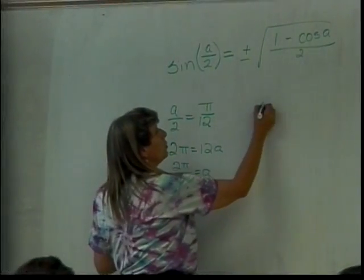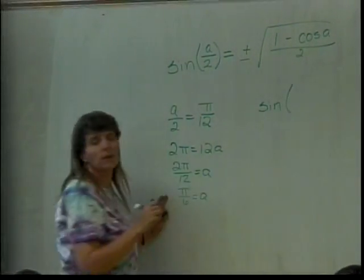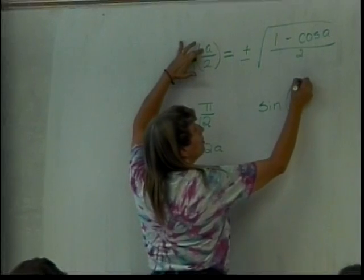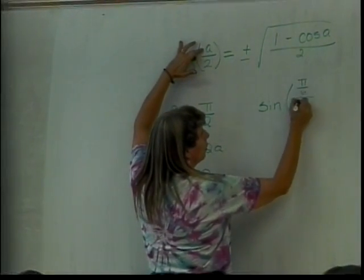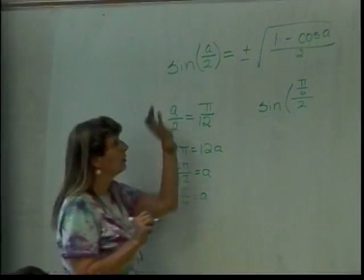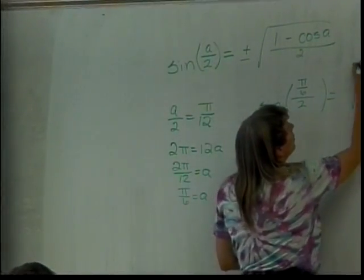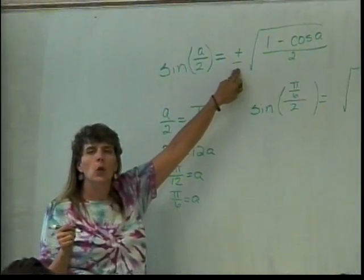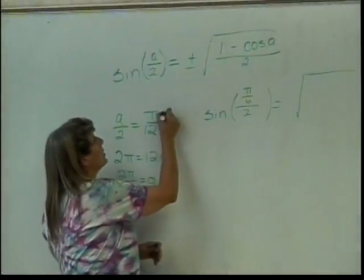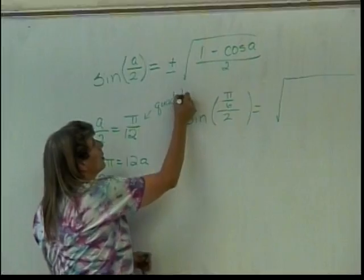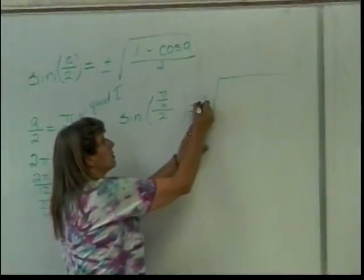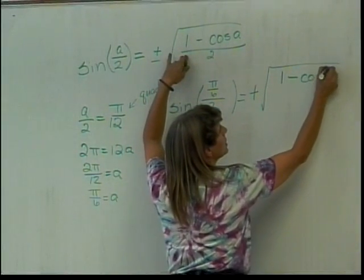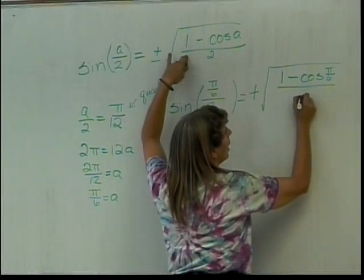So then I can use the identity, the sine of, and I have a tendency to write it, separate it out so that it is pi over 6 over 2, so that I know what my A is. And that's equal to, well, is it plus or minus? Why is it plus? Yes, pi over 12 is in quadrant 1. So that means we're going to use the plus. And then under here, I have 1 minus the cosine of pi over 6, divided by 2.